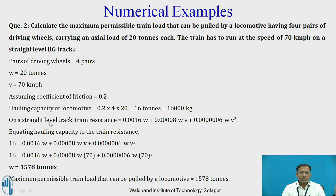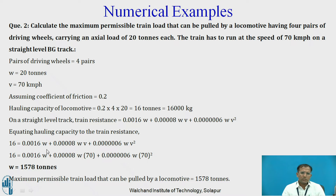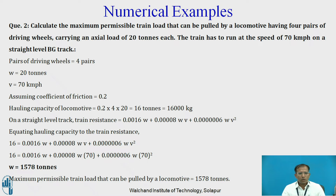We equate hauling capacity to train resistance. On a plane without any curvature or gradient, we take the independent of speed, dependent on speed, and atmospheric resistances. With V given as 70 kmph and hauling capacity of 16 tons, the unknown factor is W, the weight of the train in tons. Solving this, the maximum permissible train load that the locomotive can pull comes to 1578 tons.